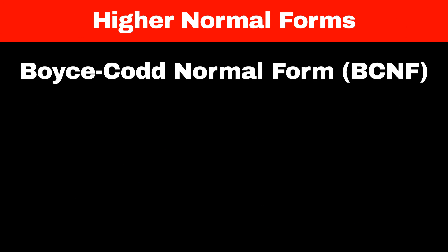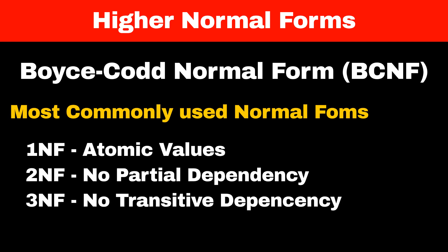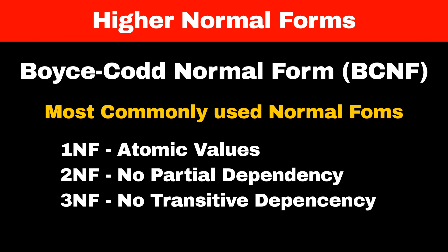There are other higher normal forms like Boyce-Codd Normal Form, also known as BCNF. But first normal form, second normal form, and third normal form are the most commonly used. Let me know in the comments if you want me to create a video on BCNF. That's it for today's video — subscribe to my channel for more such videos.